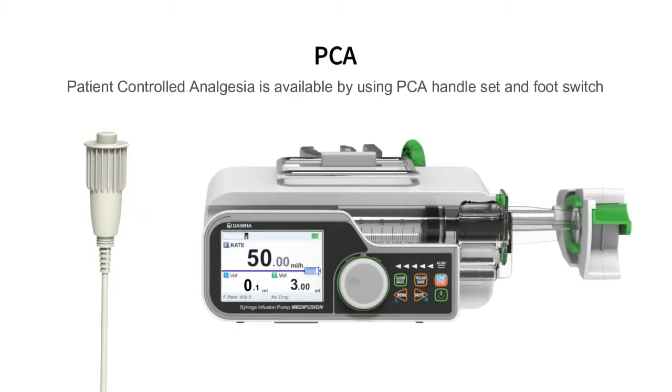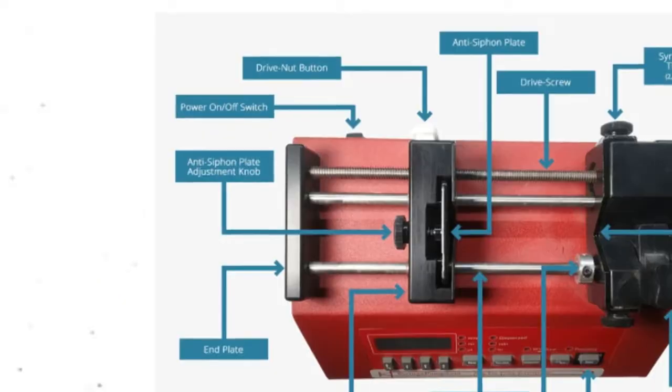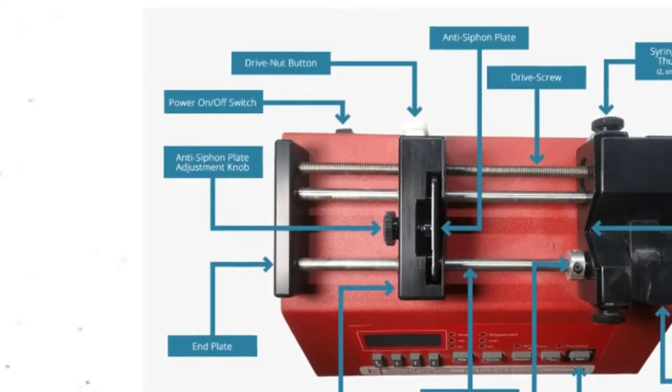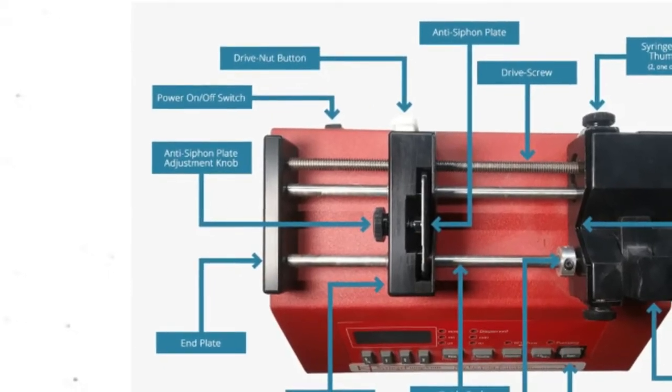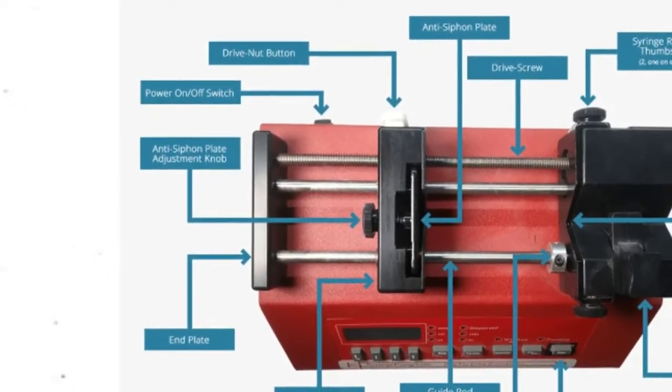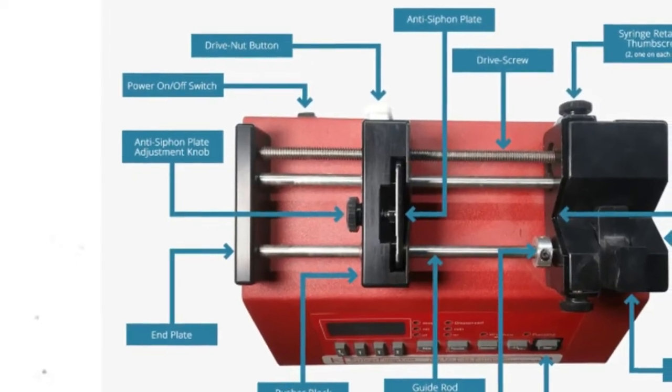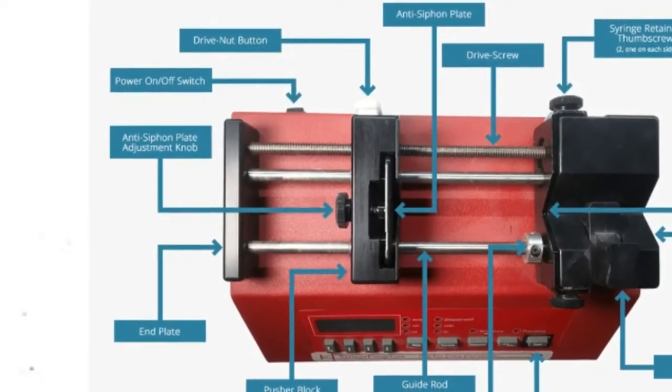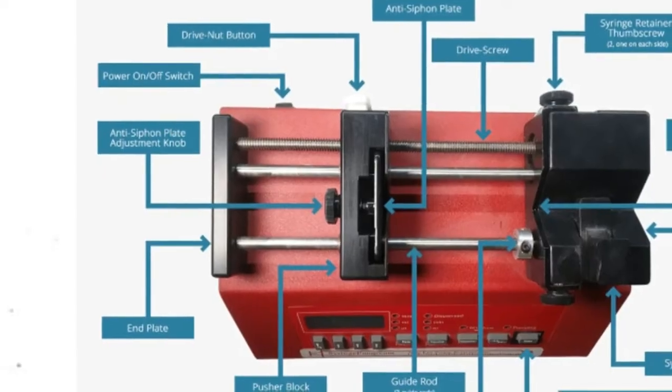Let's look into the components of a syringe pump. The syringe pump consists of anti-siphon plate adjustment knob, which is used for finger screws that are used to tighten the anti-siphon plate against the syringe's plunger flange. The second component is the end plate, which provides mechanical support for the guide rods and lead screw.